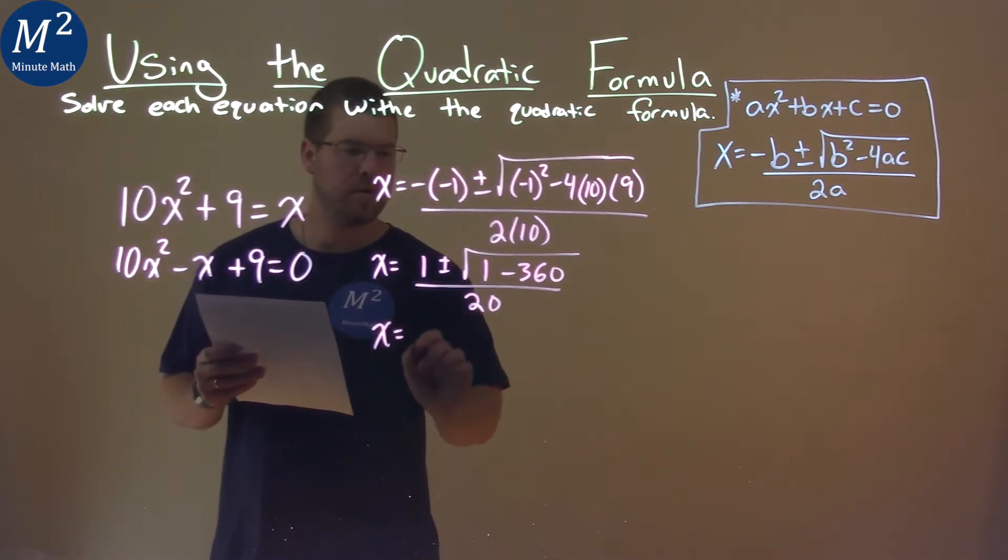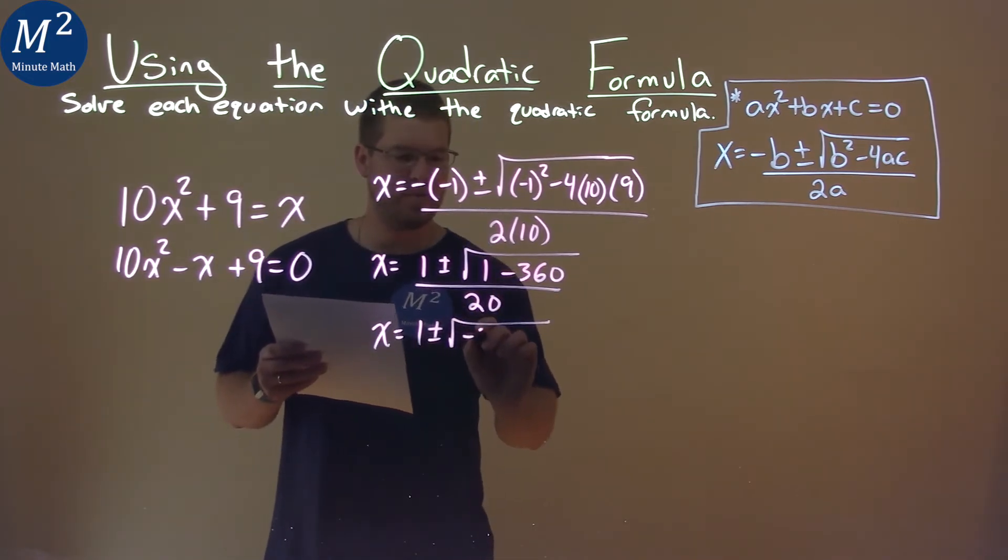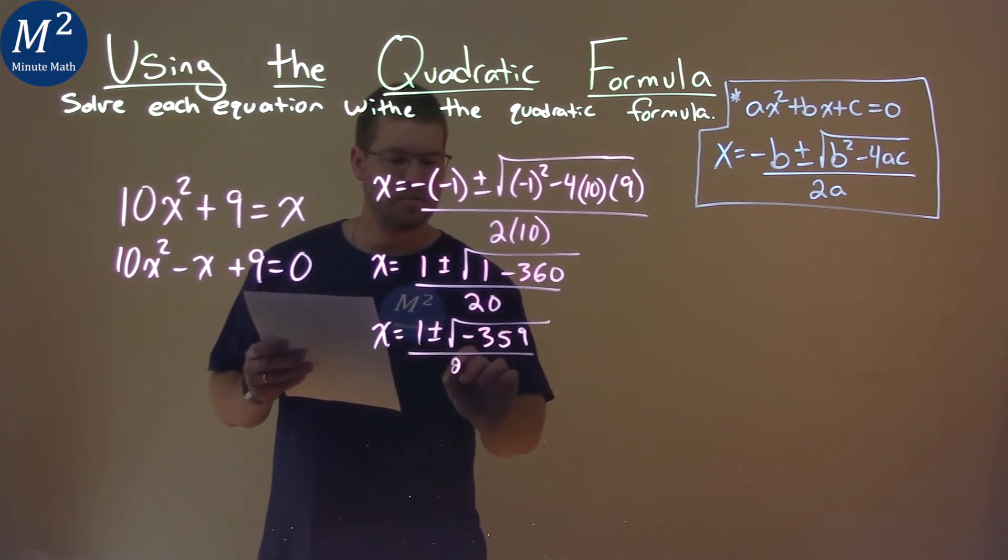From there, keep going. 1 plus or minus the square root, and 1 minus 360 is negative 359, all over 20.